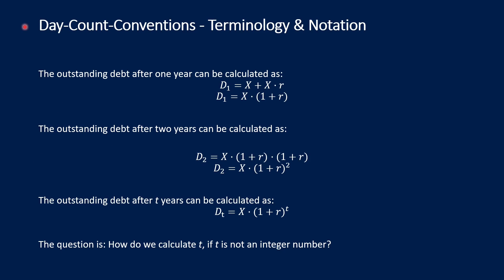First, let's go into some terminology and notation. As we already know from another video, the outstanding debt of a loan or credit after one year equals the principal amount plus interest, where interest is given by the principal amount times the interest rate. Using bracket notation, we can write: outstanding debt after year one equals the principal amount times one plus r.